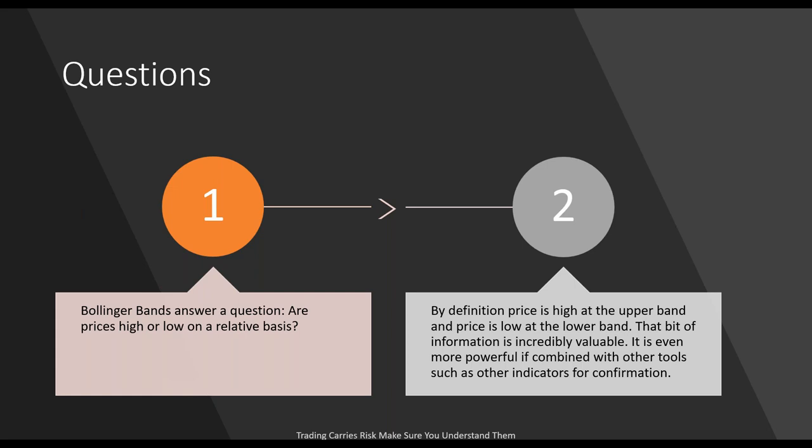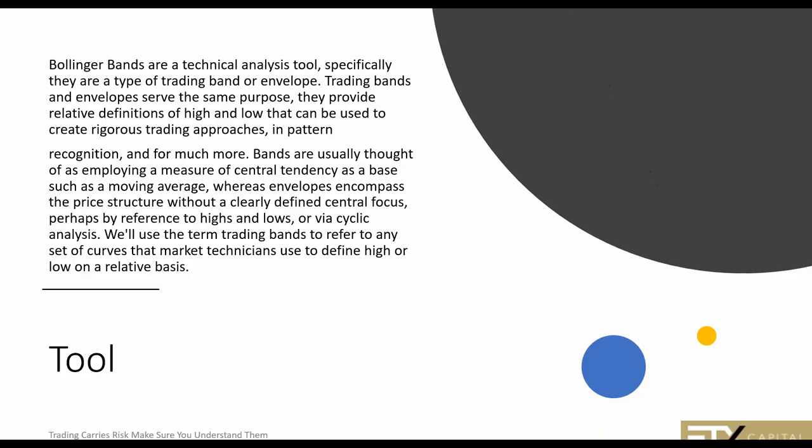Bollinger Bands answer a key question: are prices high or low on a relative basis? By definition, price is high at the upper band and price is low at the lower band. That information is incredibly valuable, and it's even more powerful when combined with other tools such as additional indicators for confirmation.